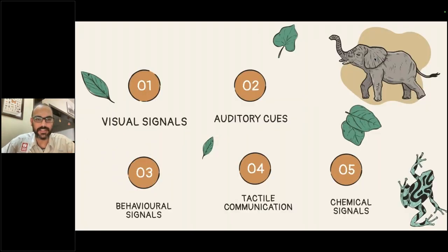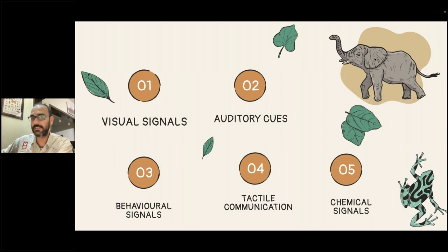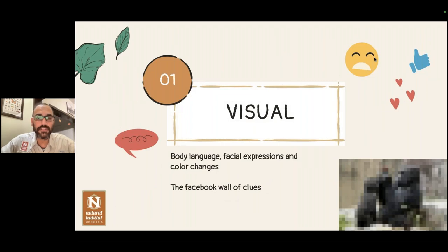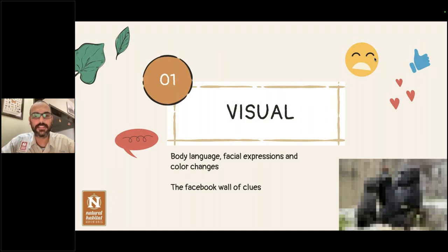When we look at animal communications, there are about five ways in which they communicate with each other. A lot of this is non-verbal — humans are the only ones considered communicators in the verbal sense. Starting with visual experience: visual cues consist of body language, facial expressions, and color changes in some species. I like to call this the Facebook wall of cues — the wall is one place which is very visual, interpretive, where everyone relates and everything hangs out.